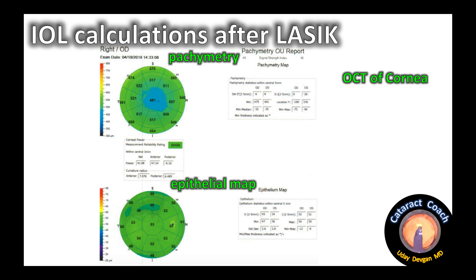Now we're looking at an OCT image of the cornea. The top half of the page is the pachymetry — how thick the cornea is at any given point. The central cornea here measures 481 microns, consistent with the ~500 microns from the previous machine. It also gives us the posterior corneal power, which is about minus 6 in most eyes. Remember: LASIK and PRK only change the anterior shape of the cornea — they don't change the posterior shape or posterior power, unlike RK, which changes the entire cornea front and back. The bottom section is the epithelial map.